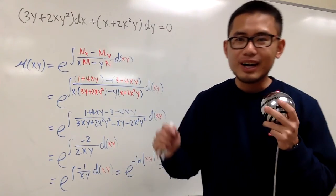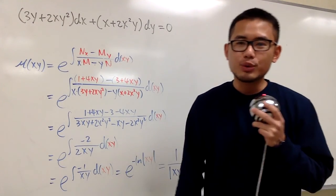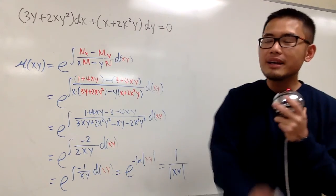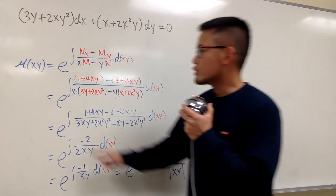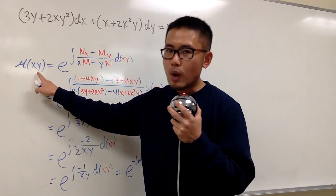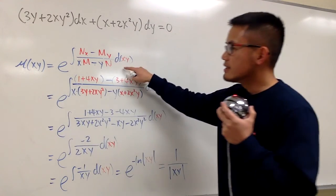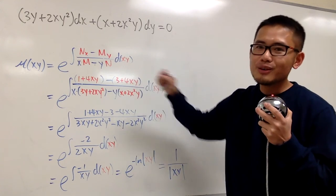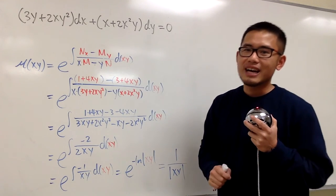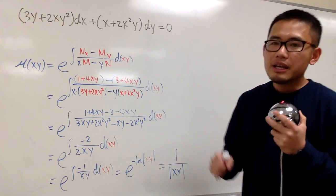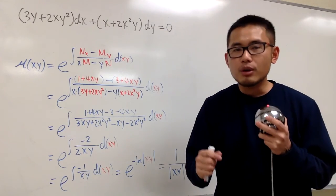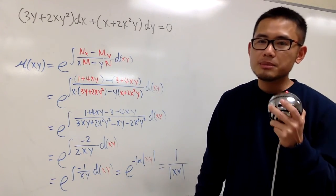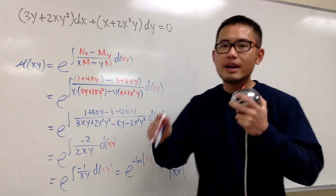Let me show you how to work out a special integrating factor as a function of x times y. We'll write that as mu of x times y. This is the formula we got earlier — if you haven't seen that video, please go check that out. Notice that it is possible to come up with a special integrating factor in terms of x and y.